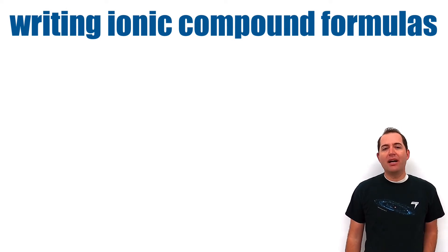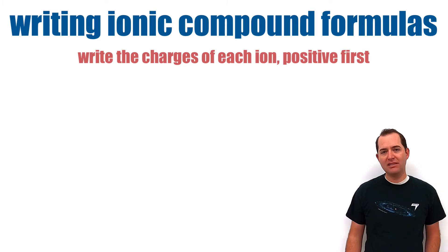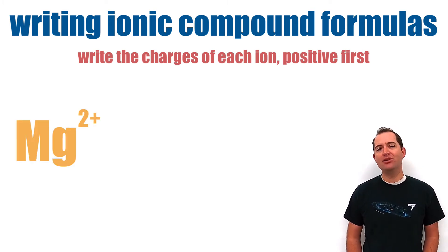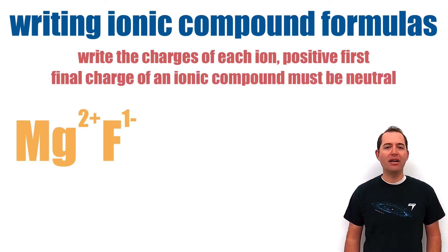Ionic compounds also need properly written formulas. This can be done by writing the charges of each ion with the positive ion first. For example, magnesium has a positive 2 charge, and fluorine has a negative 1 charge. The final charge of an ionic compound must always be neutral. So the positive and negative charges need to balance.